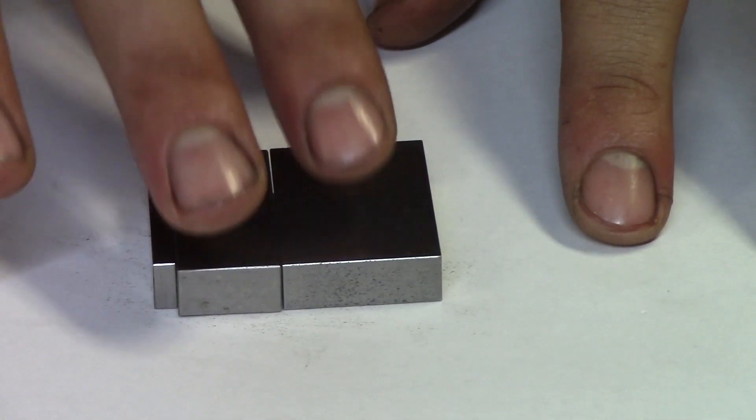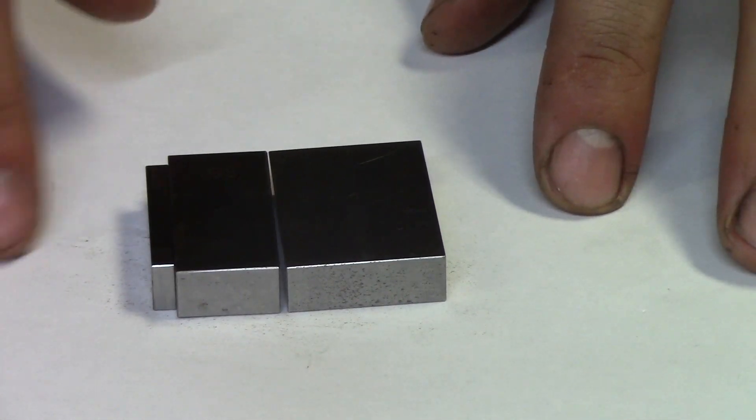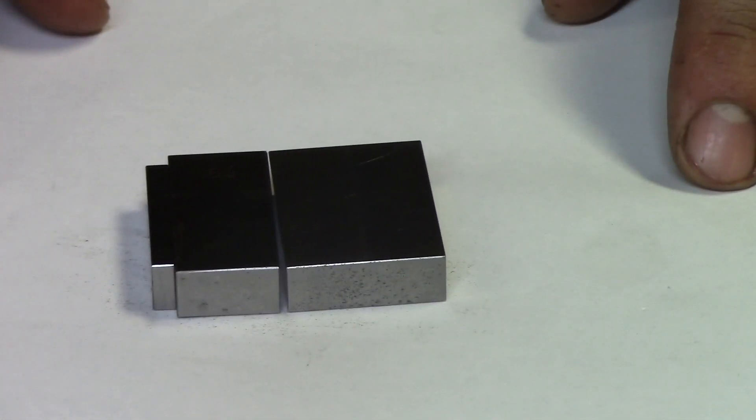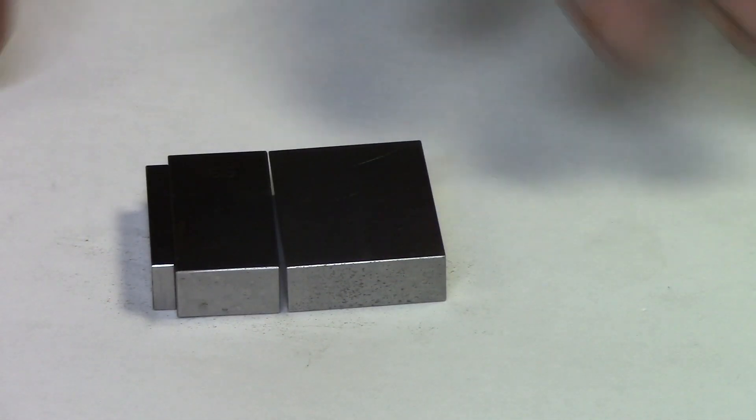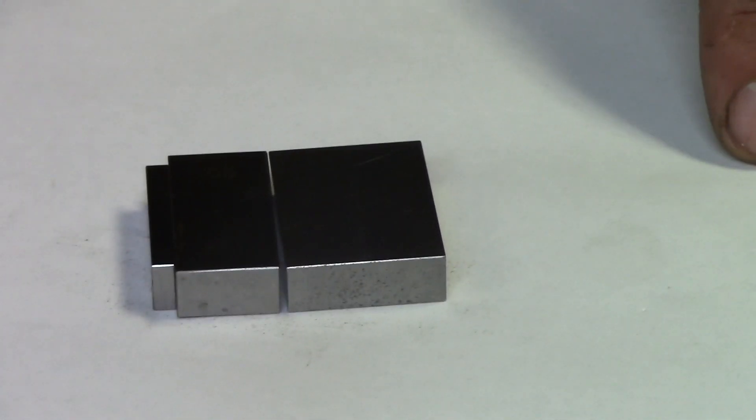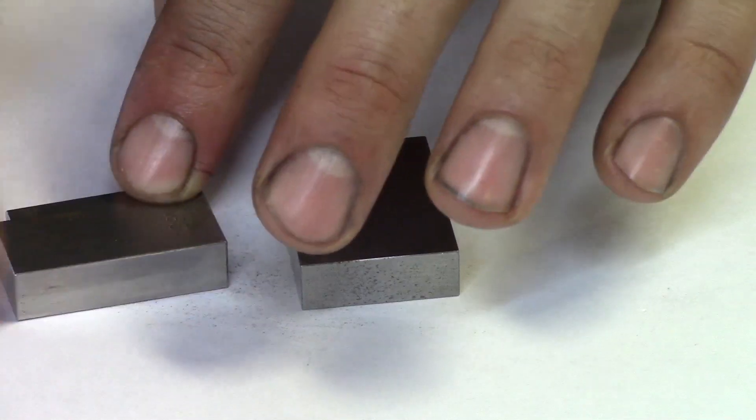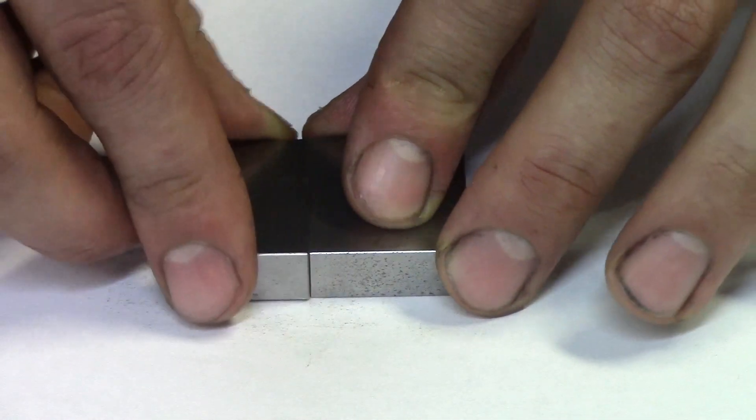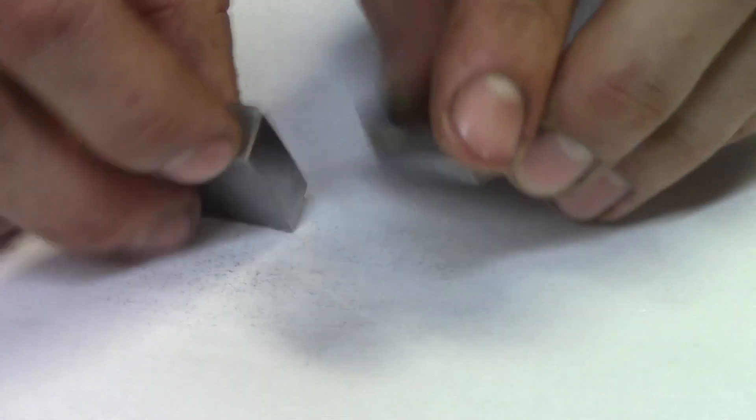The reason that paper cleans gauge blocks so well is because of the tiny little pores inside of the paper. You don't want to do it on a rough surface like a wood table, so try to use a flat surface because the gauge block's flat. That is how you clean and stack a gauge block set together.